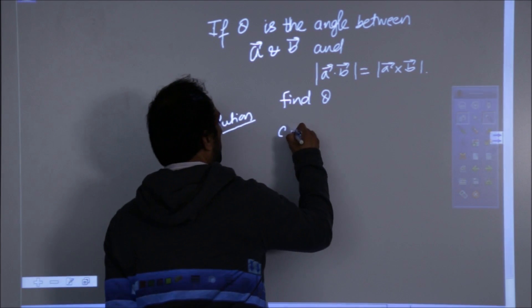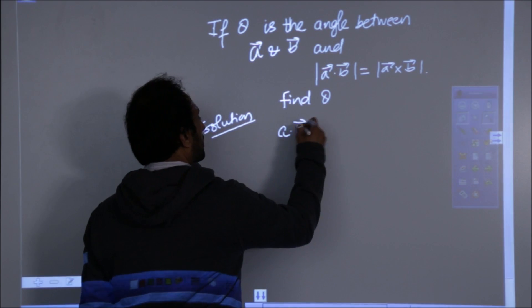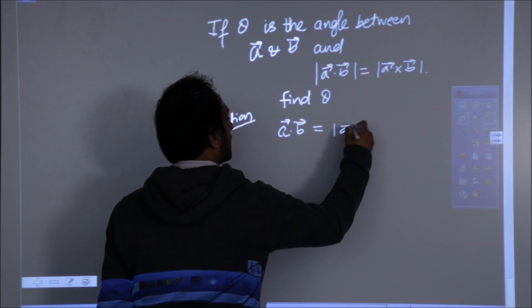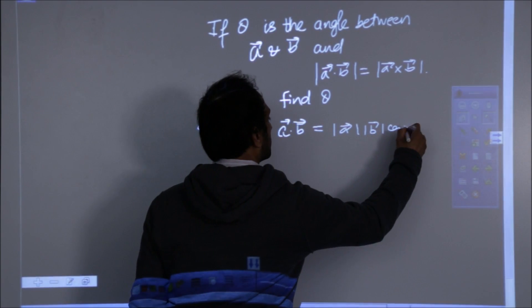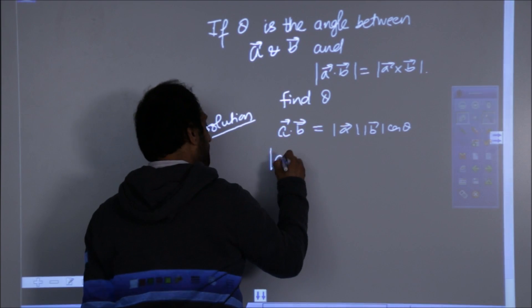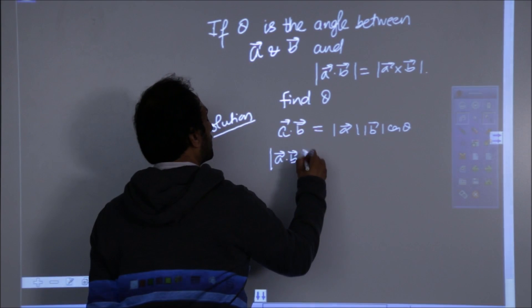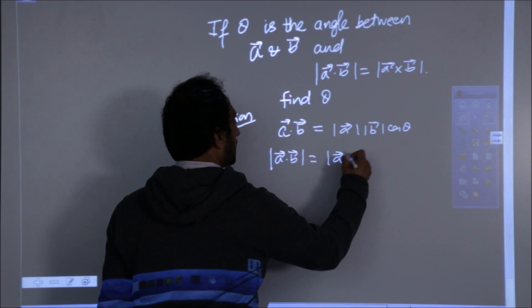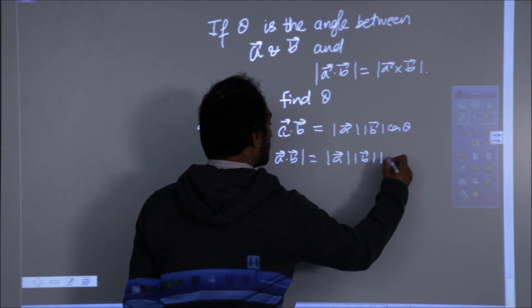What is a dot b? a dot b is mod a mod b cos theta, so what is mod of a dot b vector? That is mod a mod b mod of cos theta.